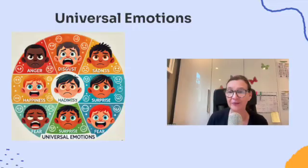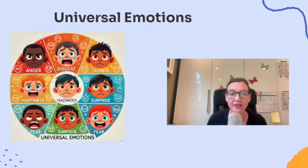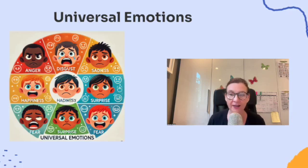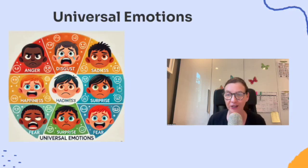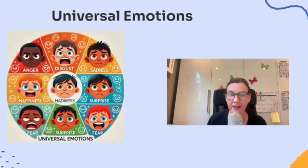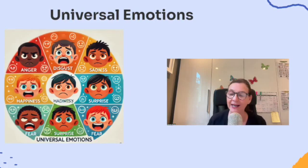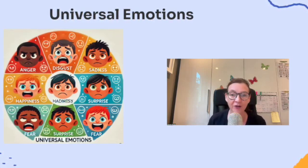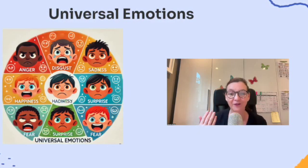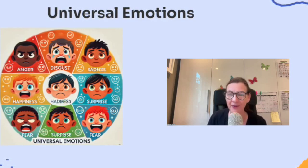We're going to start off by talking about something really fascinating: universal emotions. Did you know that there are certain emotions that we all share no matter where we're from in the world? These emotions include anger, disgust, sadness, happiness, surprise, and fear. People across different cultures recognize these emotions in the same way, mostly through facial expressions. This idea comes from research psychologist Paul Ekman. He traveled to remote areas and showed people pictures of faces expressing different emotions. People, even in cultures that had no contact with the outside world, could accurately identify emotions like happiness from a smile or anger from a scowl. This suggests that these emotions aren't something we learn, but something we're born with.